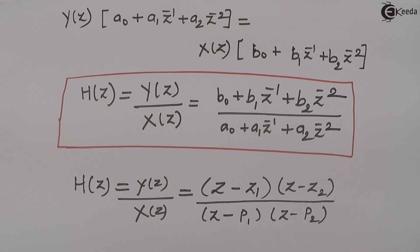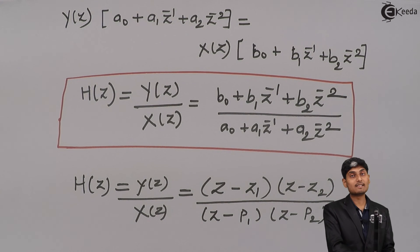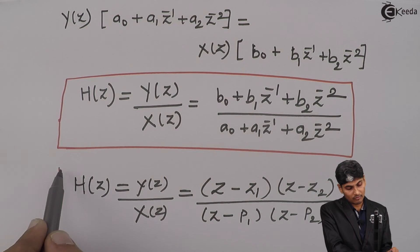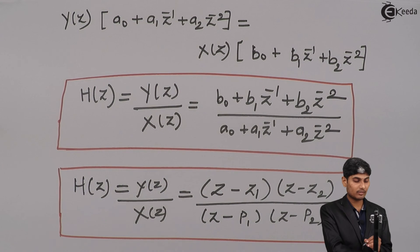And here I will get (z minus p_1) into (z minus p_2) where p_1, p_2, z_1, z_2 are the roots of numerator and denominator polynomial respectively. So, this is how we normally represent a system transfer function.